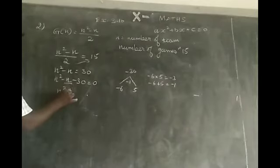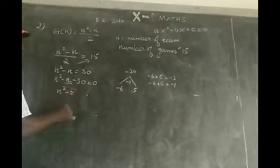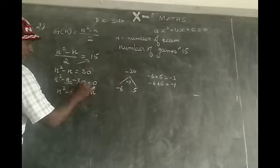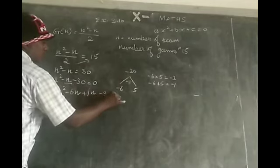So we split the middle term n to n square minus 6n plus 5n minus 30 is equal to 0.